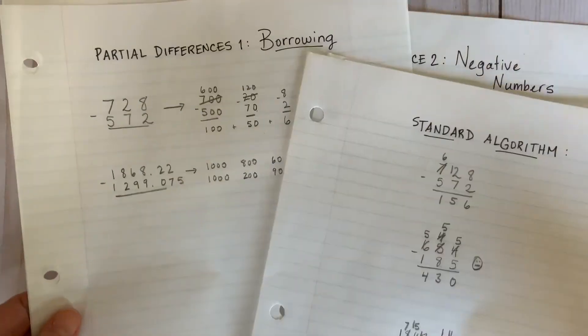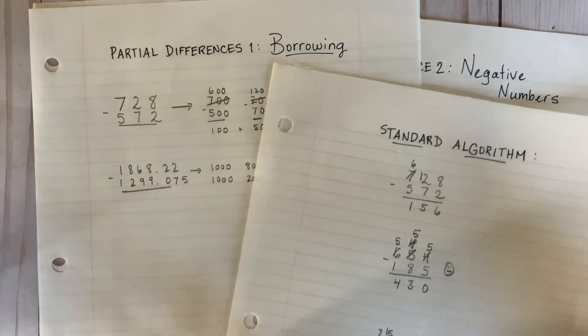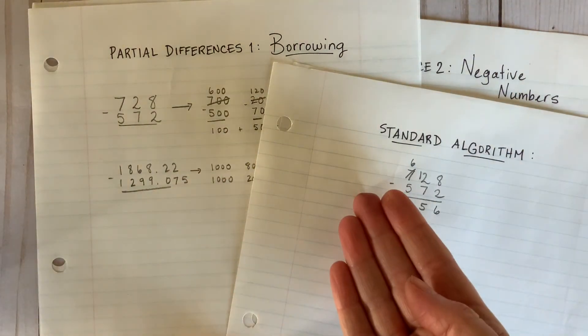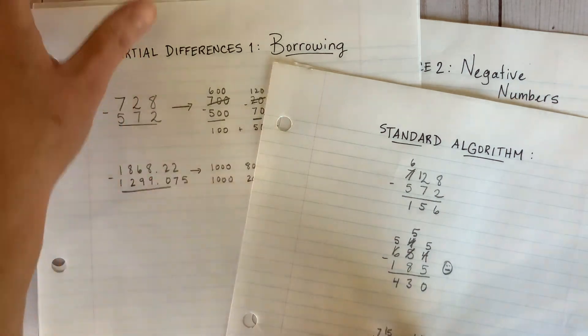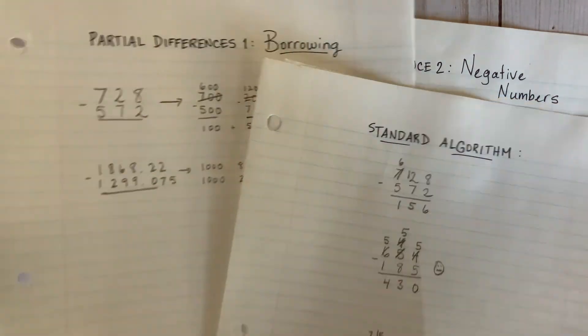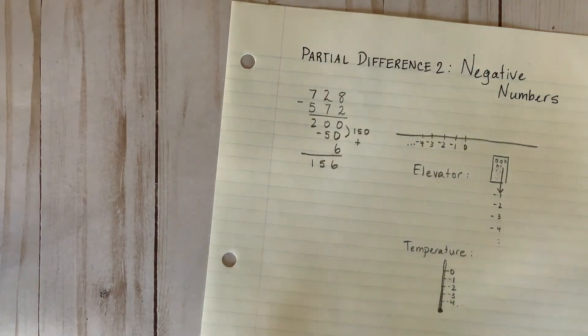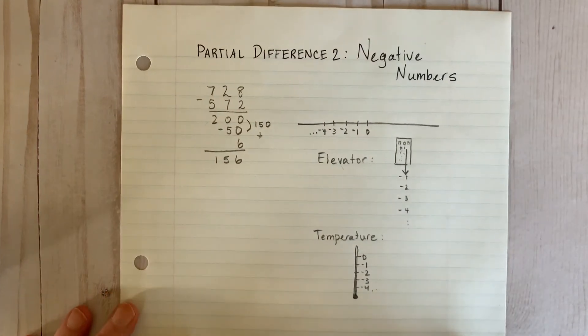So there you have it. Three common methods for stacking and subtracting. Partial differences with borrowing and the standard algorithm complement each other quite well. And partial differences with negative numbers is an intriguing alternative.